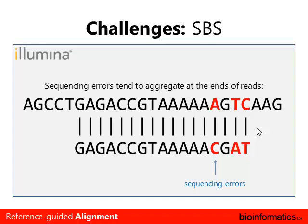For each sequencing technology, there are different challenges. For Illumina, which uses sequencing by synthesis, sequencing errors tend to accumulate towards the ends of the reads. For aligners like BWA, this is relevant because BWA has a built-in read trimmer: it starts looking at base qualities at the 3' side of the read and trims off the really bad bases from the end, giving you a much better alignment.